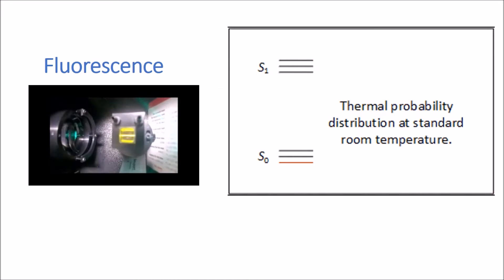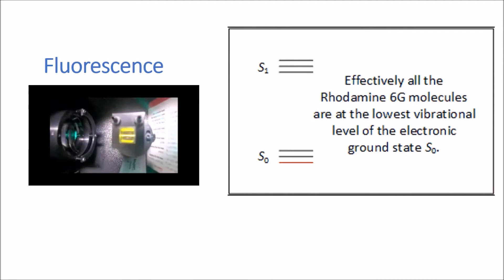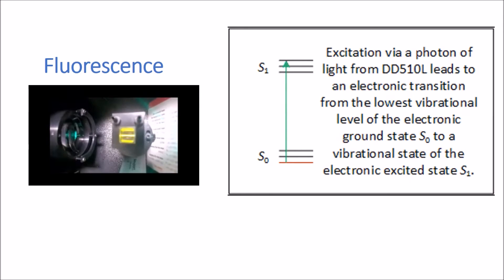At standard conditions, i.e. room temperature, the thermal energy available to the system is relatively low. This means the probability distribution is such that pretty much all the molecules are at their lowest vibrational level of their electronic ground state.